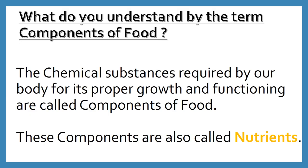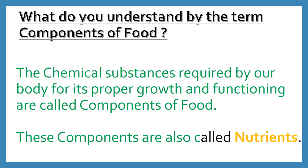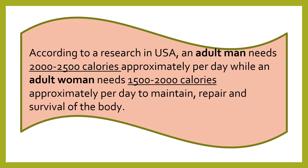Let us first understand what the term 'components of food' means. The chemical substances required by our body for its proper growth and functioning are called the components of food. These components are also called nutrients. According to research in the United States of America, an adult man needs approximately 2,000 to 2,500 calories per day, while an adult woman needs approximately 1,500 to 2,000 calories per day to maintain, repair, and ensure survival of the body.